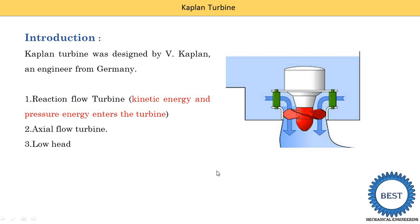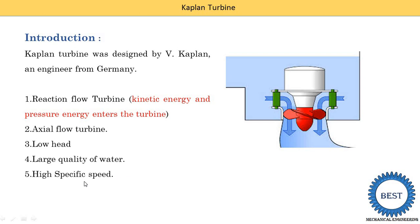Third point: it is used for a low-capacity hydropower plant, meaning it operates at low head. Fourth point: a larger quantity of water is required for Kaplan turbines. Fifth point: it has a high specific speed. These five points are compulsory to write in examinations along with the figure.